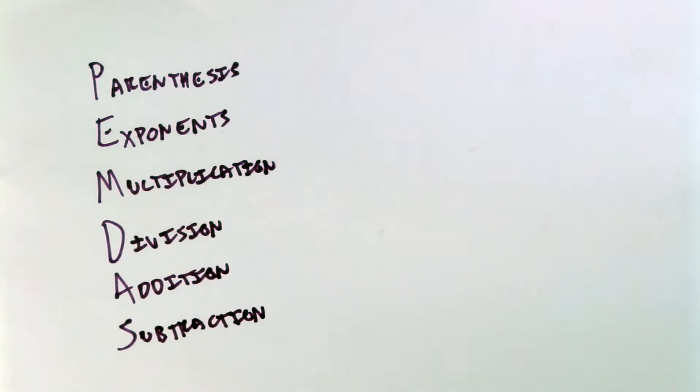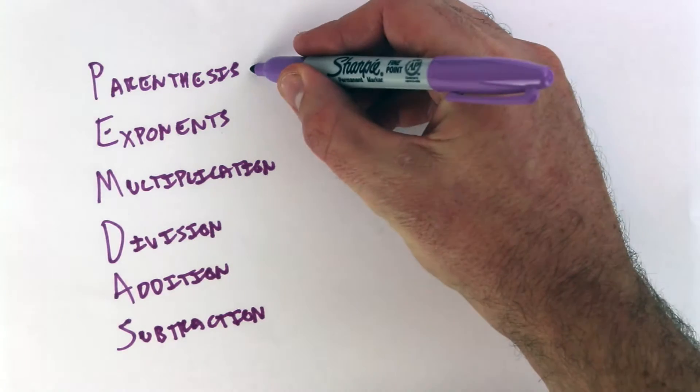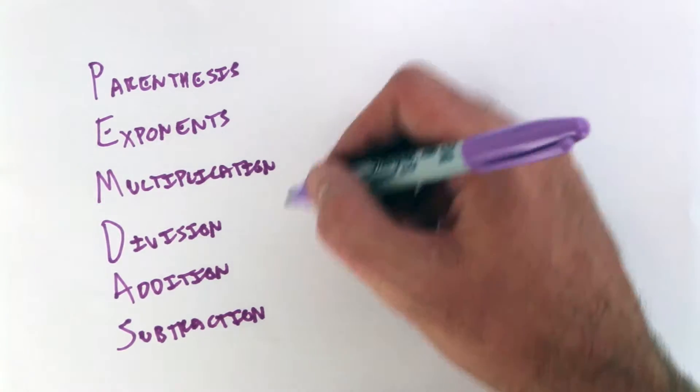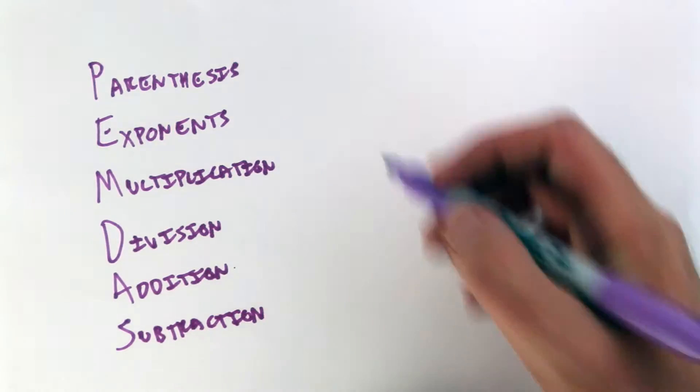And so this is the order that you will go in when you approach a math problem. You'll do what's in the parentheses first, then the exponents, then multiplication, then division, then addition, then subtraction. This is the order of operations.